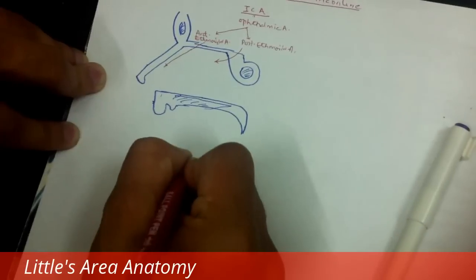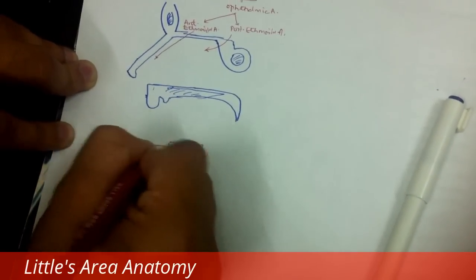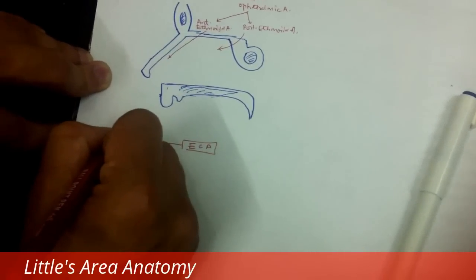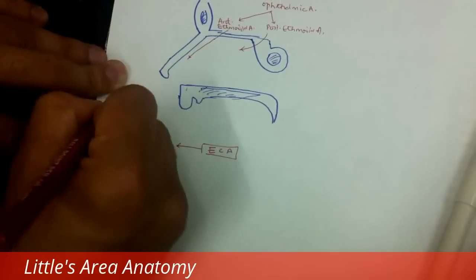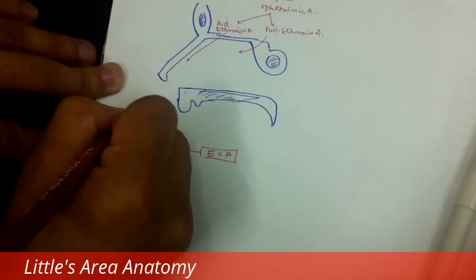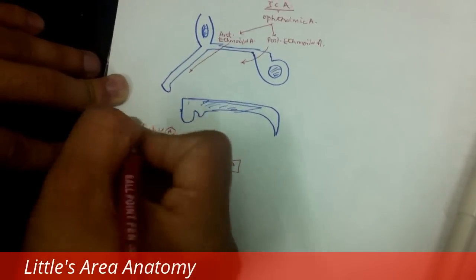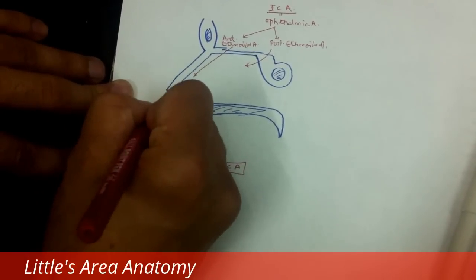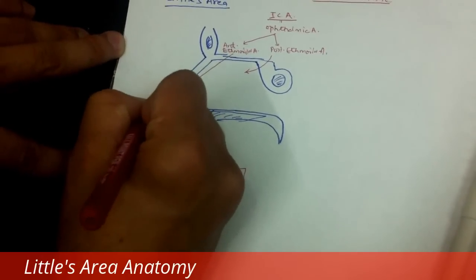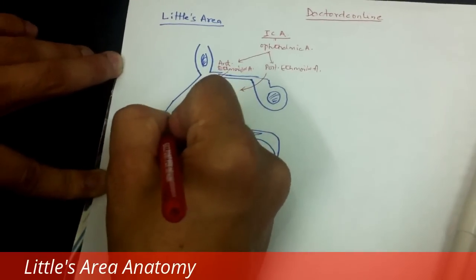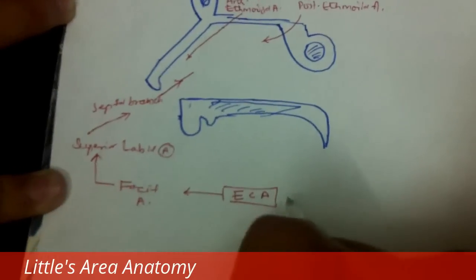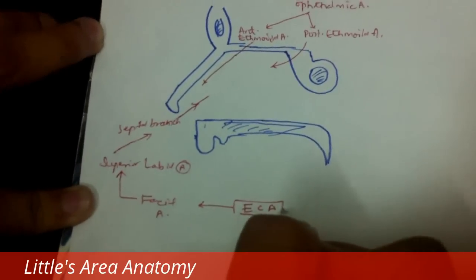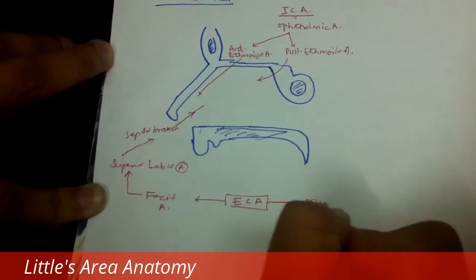Another blood supply is carried out by the external carotid artery. The first branch of the external carotid artery is the facial artery, and the facial artery gives the superior labial artery, and the superior labial artery gives the septal branch towards the vestibule, towards the nasal septum.